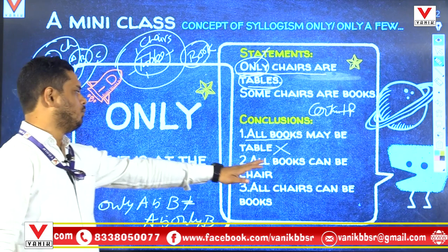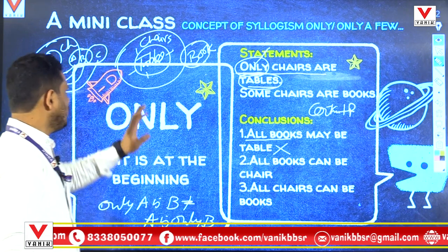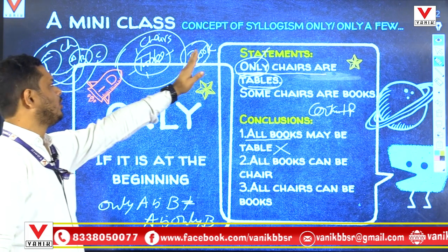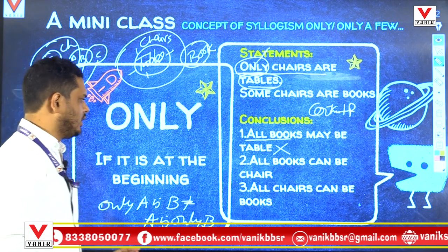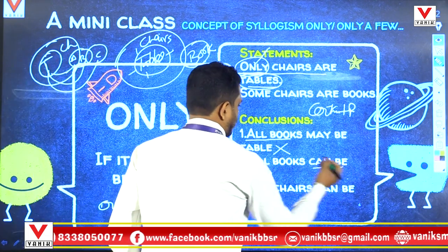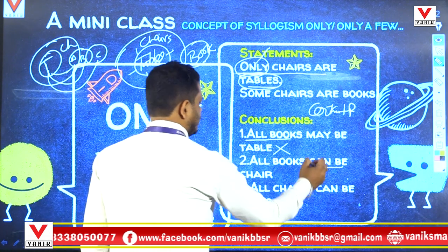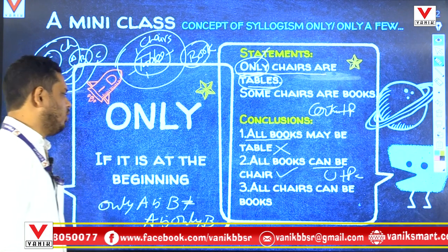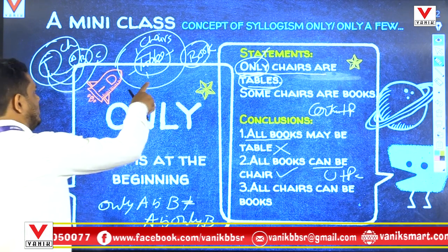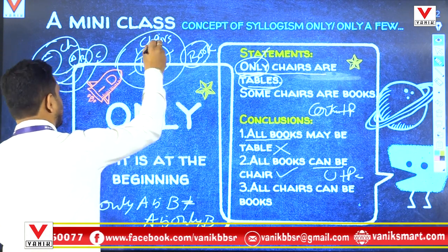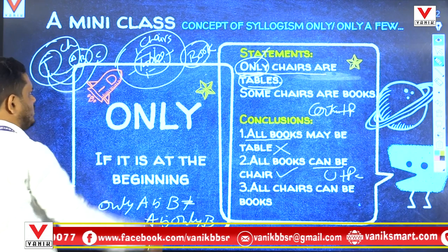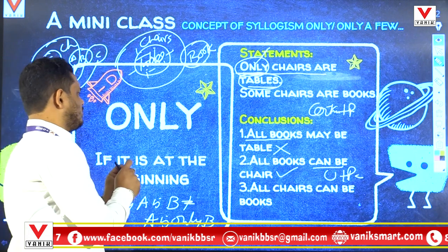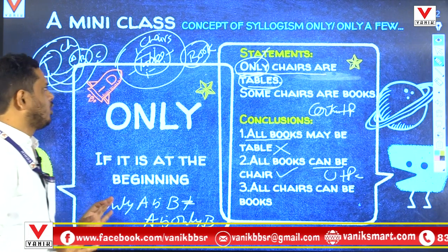Number two: 'all books can be chair.' There is no problem here. The relation of all books with chairs is uncertain, and 'can be' suggests a possibility-type question. Uncertain plus possibility makes true. Number three: 'all chairs can be book.' All chairs cannot be book because table is negative from all other items. Chairs all part cannot be part of book. It is a very simple point.